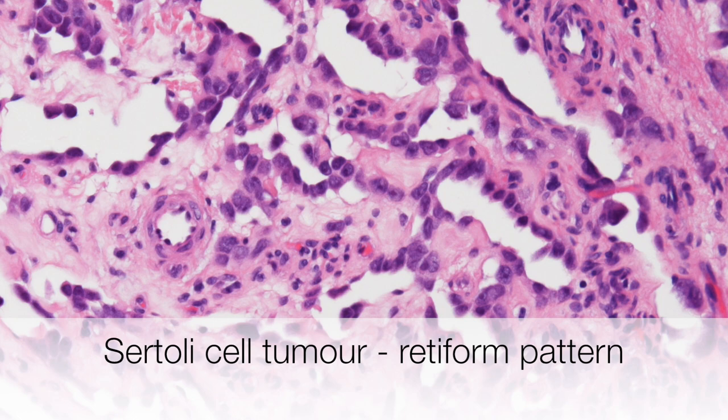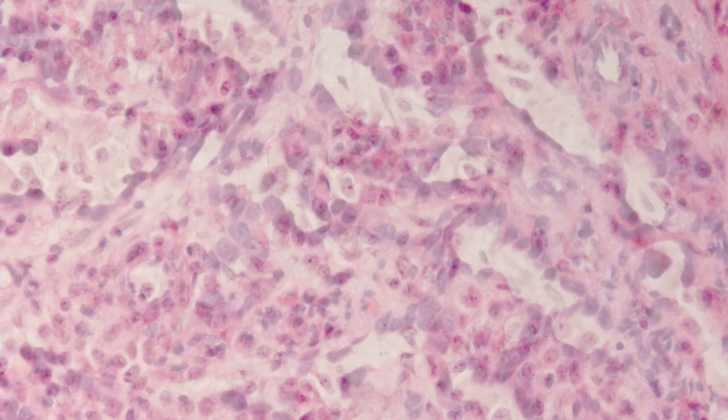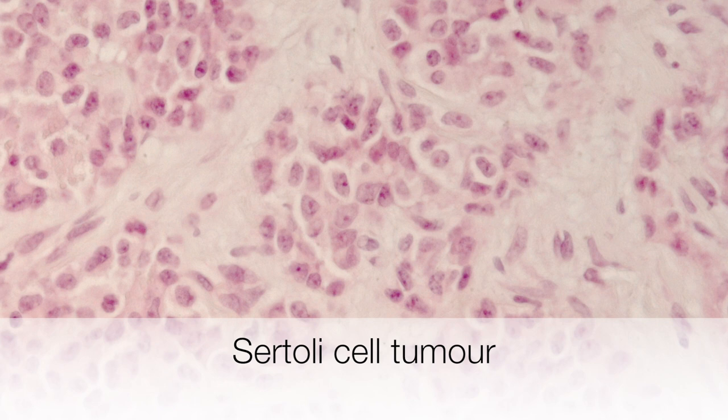On high power, this Sertoli cell tumour shows the typical nuclear features with rather small nucleoli, ovalish nuclei, and moderate amounts of pink staining cytoplasm.